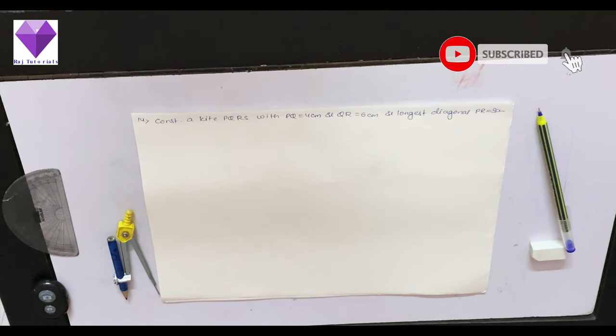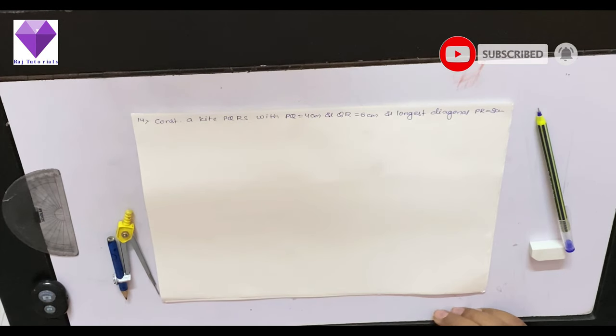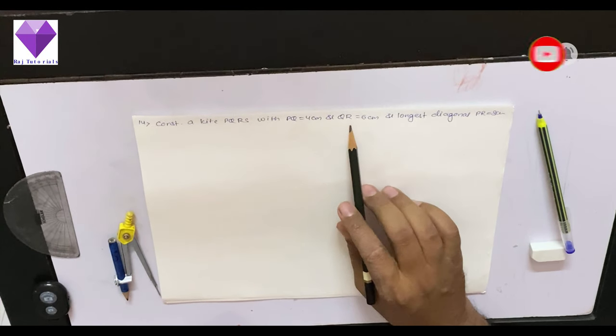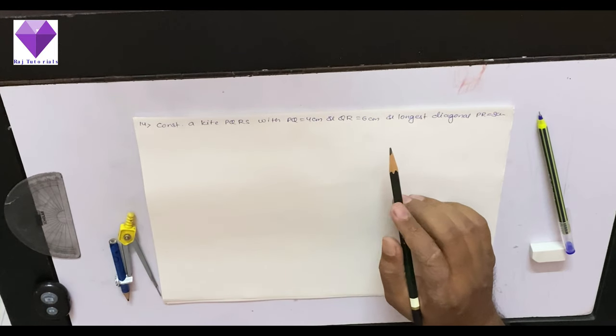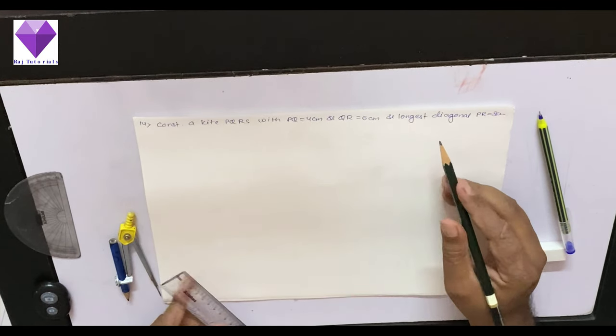Hello students, today we are going to construct a kite PQRS with PQ equal to 4 cm, QR equal to 6 cm, and the longest diagonal PR equal to 8 cm.